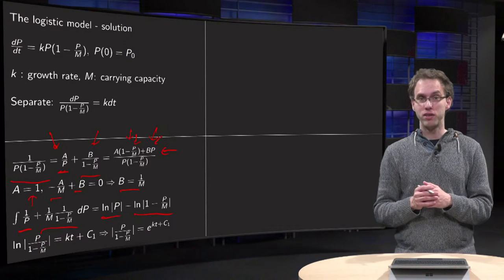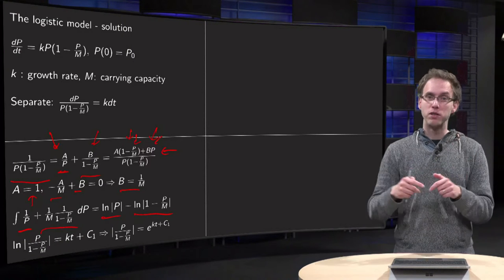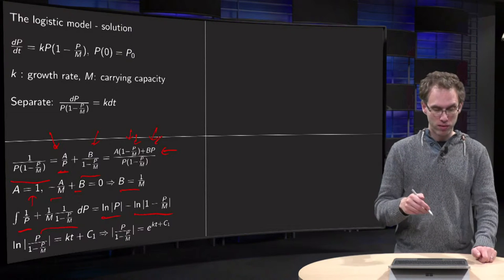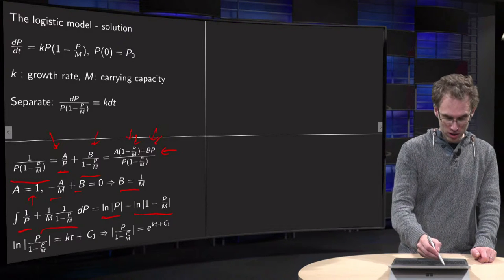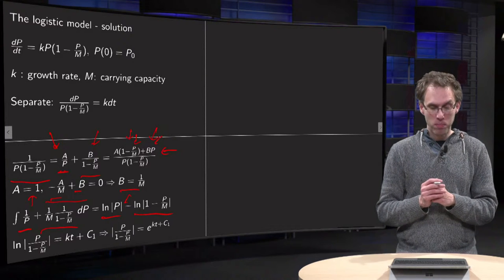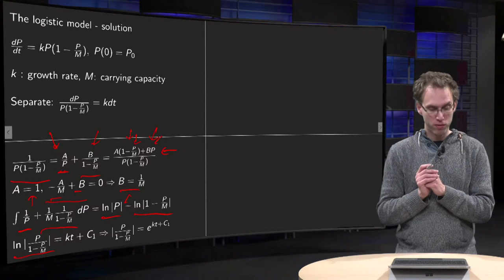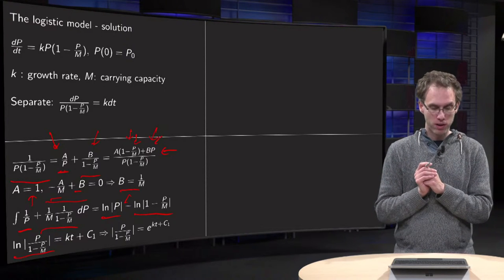You can check now by differentiating: the log of (1 minus P over M) equals 1 over (1 minus P over M) times minus 1 over M. That's the additional minus sign, gives you exactly this term, and then you can combine the two logs into one term. It gives you the log of the absolute value of P over (1 minus P over M).